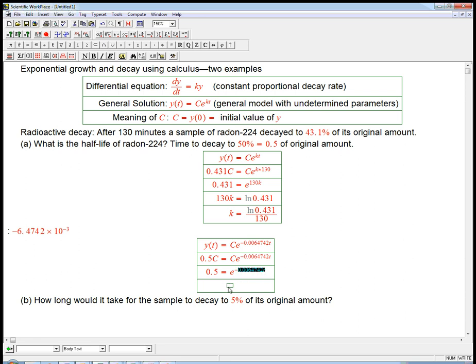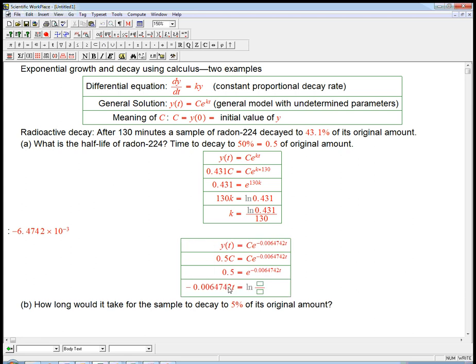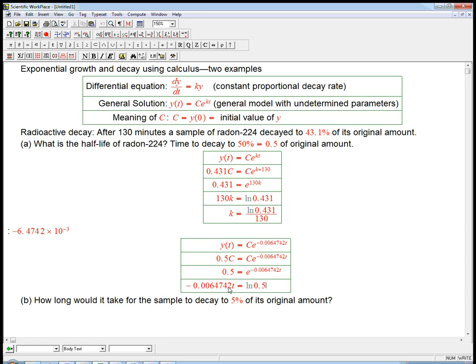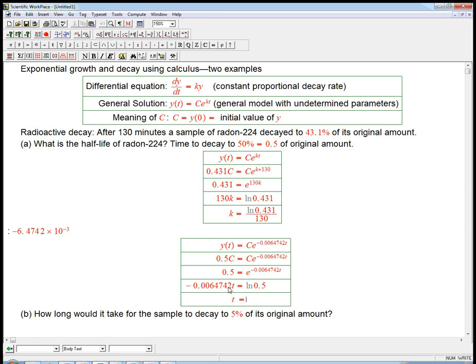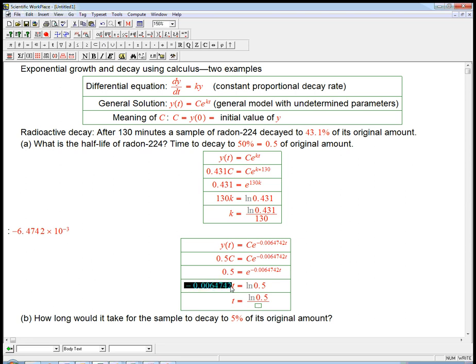I'll fudge it. That equals ln of 0.5. And so t is ln of 0.5 divided by this k.